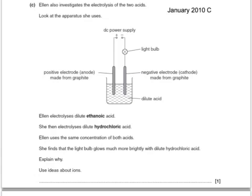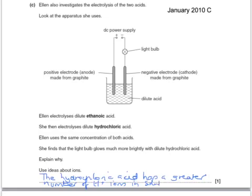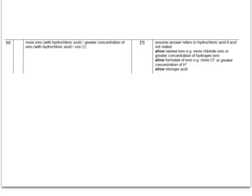Here's a past exam question. Ellen also investigates the electrolysis of the two acids. Look at the apparatus she uses. She electrolyzes dilute ethanoic acid and then dilute hydrochloric acid. She uses the same concentration of both acids. She finds that the light bulb glows much more brightly with the dilute hydrochloric acid. Explain why using ideas about ions. Well, this is because the hydrochloric acid has a greater number of H+ ions in solution. The answer says that there are more ions with hydrochloric acid or there's a greater concentration of ions with hydrochloric acid.